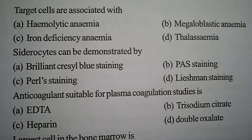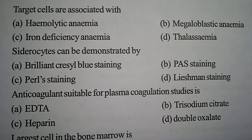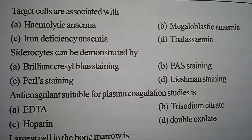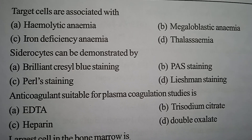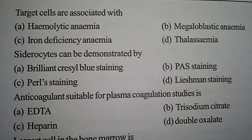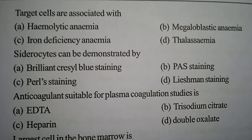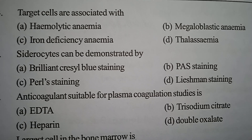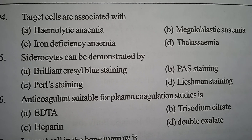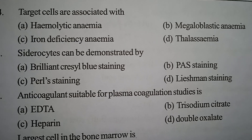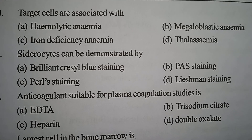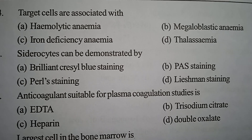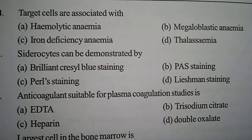Next one: target cells are associated with — Option A: hemolytic anemia. Option B: megaloblastic anemia. Option C: iron deficiency anemia. Option D: thalassemia. Correct answer: Option D, thalassemia.